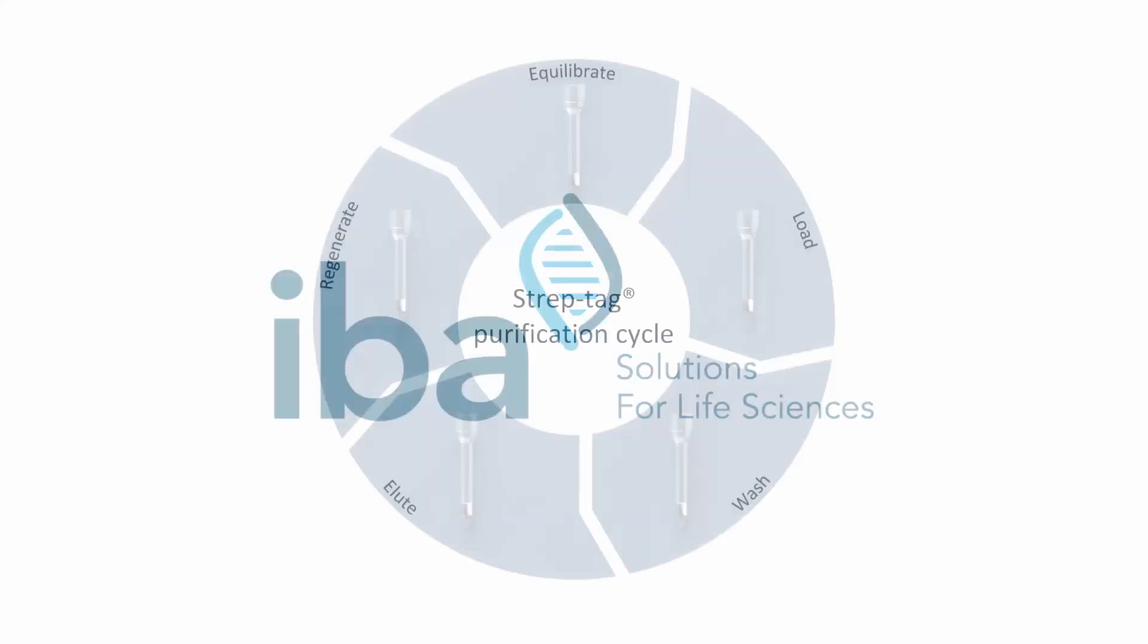IBA's unique Streptag system is a commonly used tool for the affinity purification of recombinant proteins within an easy one-step purification procedure.